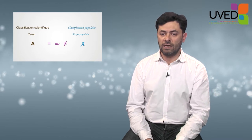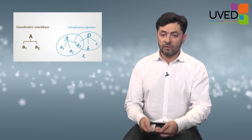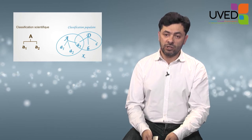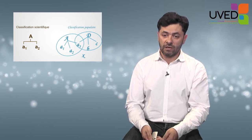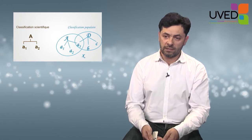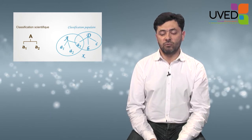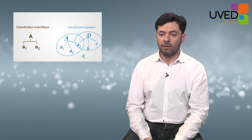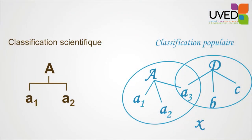We may see that there doesn't always seem to be a correspondence between the two. In scientific classification, there is a strict hierarchy where each element can only be in one given place. This is not true for popular classification — for example, element A3 may be present in category A but also in another category D, next to different taxons such as B and C. In popular classification, some elements will not be categorized at all and will remain outside any whole category, such as X.